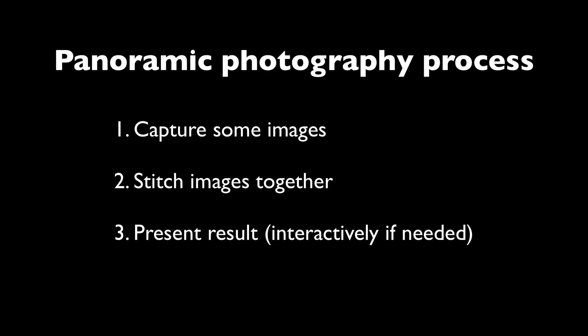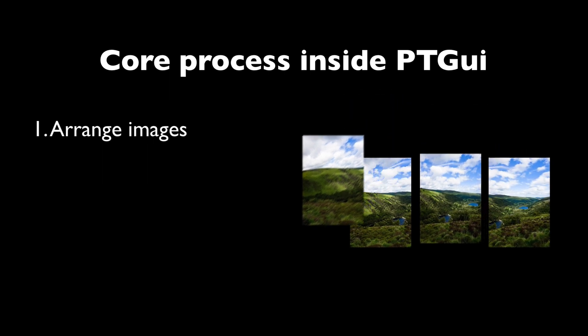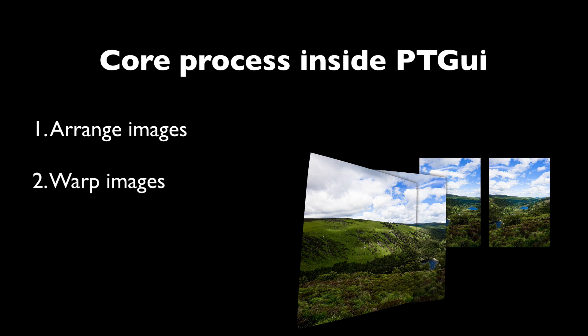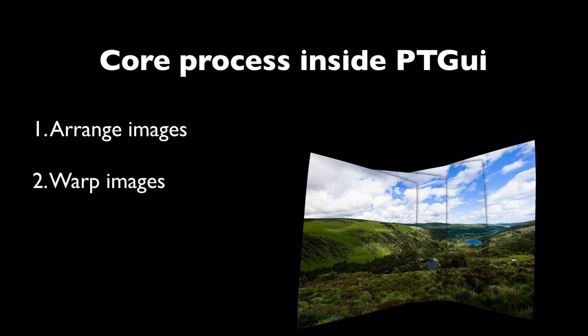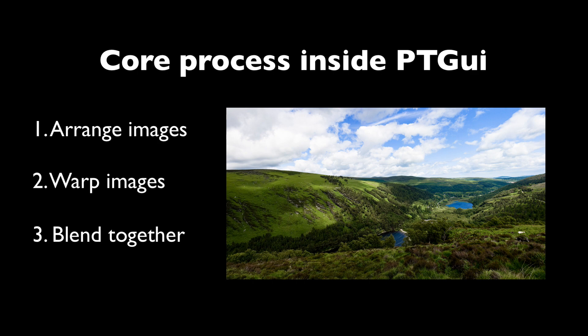In these three steps, PTGUI is fully at home in the second — the assembling or stitching part. But it can also help you with presenting the images because it has a little web viewer built in that you can use. The core process is that PTGUI needs to figure out how the images need to be laid out relative to each other. Then when it knows that, it needs to warp those images to compensate for the particular hardware that you use — the type of lens, the type of sensor, etc. And then when that's done, it just needs to blend across the transitions and hopefully produce a beautiful seamless image.